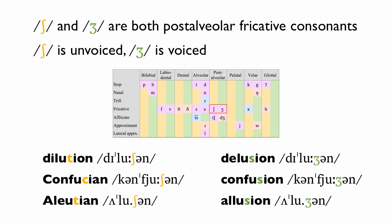Sh and Zh are both post-alveolar fricatives. Sh is unvoiced. Zh is voiced. Delusion — Delusion. Confucian — Confusion. Illusion — Illusion.